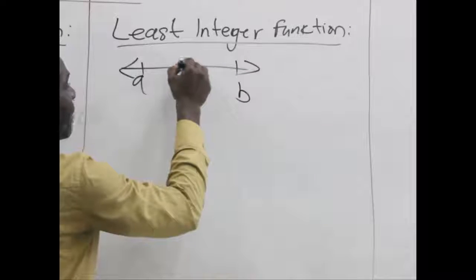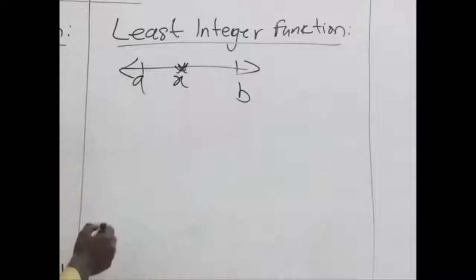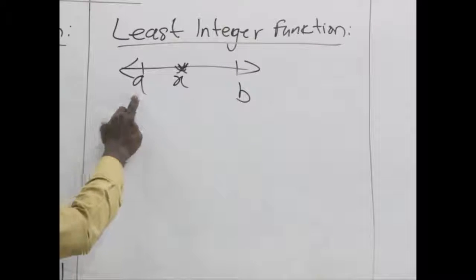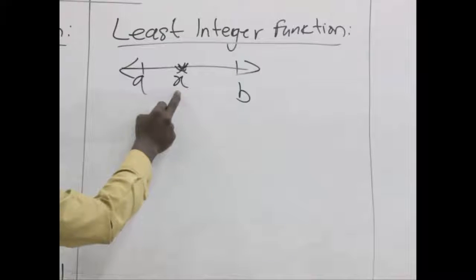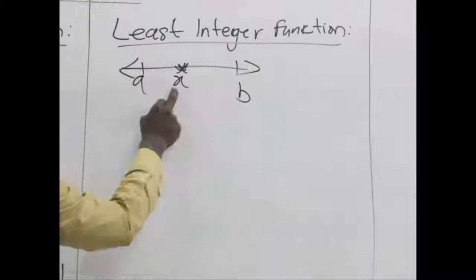And the number equation or the function equation is, let's say, x. Here, we want the number that is least but greater or equal to. We know that a is less than x, b is greater than x.